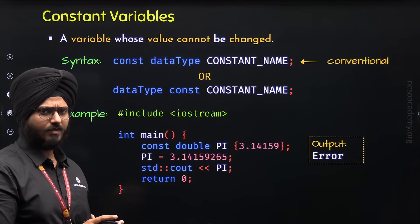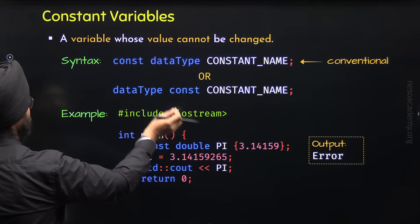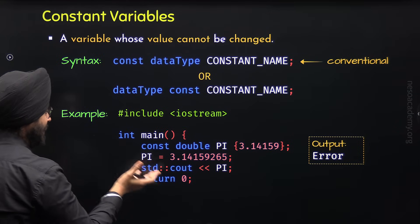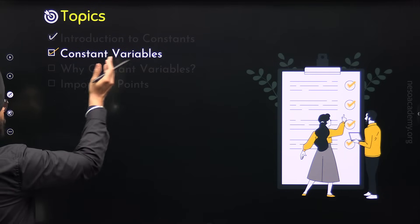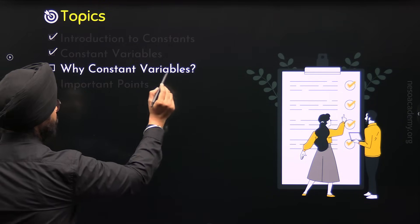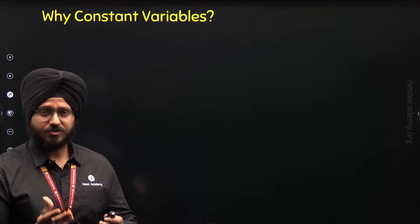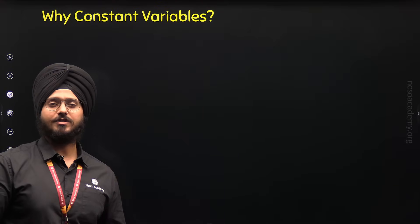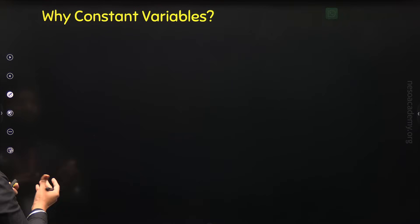With this, we have learned what constant variables are, what syntax we can follow to define them, and through an example, how to define a constant variable — so we are done with the second topic. Now let's move to the third topic, where we will understand why we need constant variables. If we have normal variables, then why do we need constant variables? There are a couple of reasons we need to know.